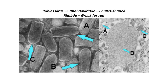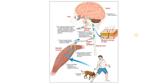Rabies virus belongs to the family Rhabdoviridae. 'Rhabdo' in Greek means rod, and it is called this way because under the electron microscope you can see that the viruses look like rods or bullet-shaped. This is a picture from an infected cell, and you can see these big factories of virus called nigri bodies, from which rod-shaped viruses are budding out.